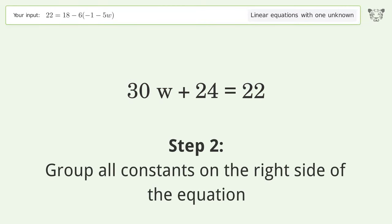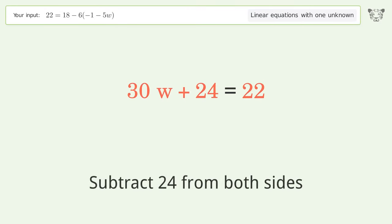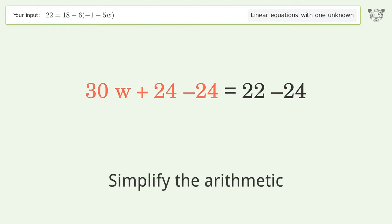Group all constants on the right side of the equation. Subtract 24 from both sides. Simplify the arithmetic.